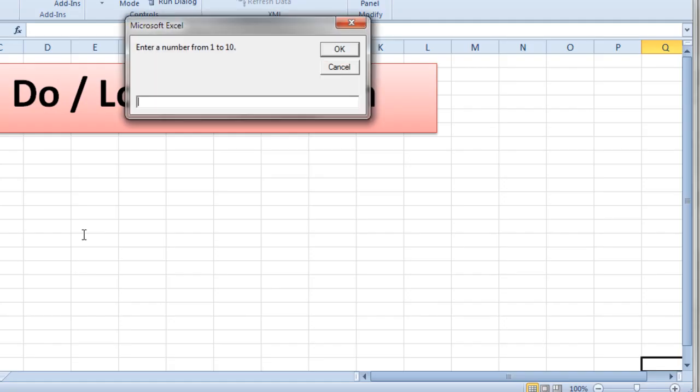And this time I'm going to type in a 0 and hit enter and it says, oops, type a number from 1 to 10. Let's try 11 and hit enter. Same error,